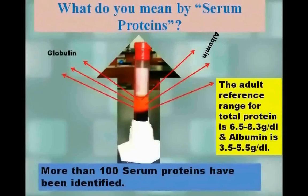Major protein fractions present in serum are albumin and globulin. The adult reference range for total protein is 6.5 through 8.3 grams per deciliter and albumin is 3.5 through 5.5 grams per deciliter.